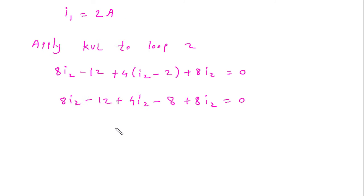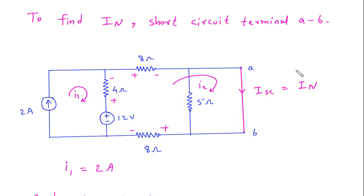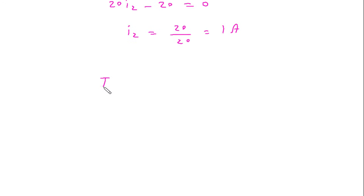So this will be 20 I2 and this will be minus 12 minus 8, which is minus 20, is equal to 0. So this will be I2 is equal to 20 by 20, so this will be 1 Ampere. I2 is equal to 1 Ampere and I2 is equal to In, therefore In is equal to 1 Ampere.